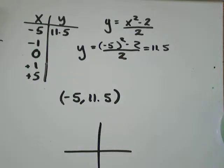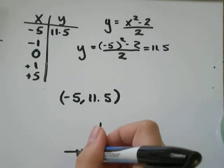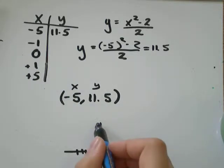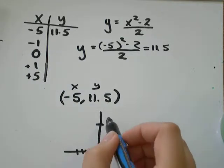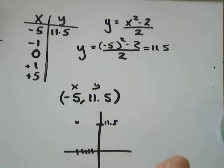So, if I had a little graph down there, negative 5 would be 1, 2, 3, 4, 5. Negative 5 in the X direction. And 11.5, I'll say that's like somewhere up here. So, I've got a point right there that I can plot.